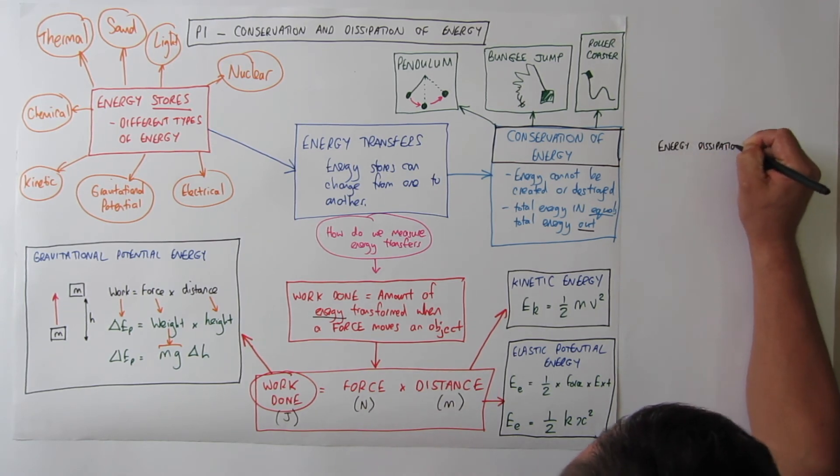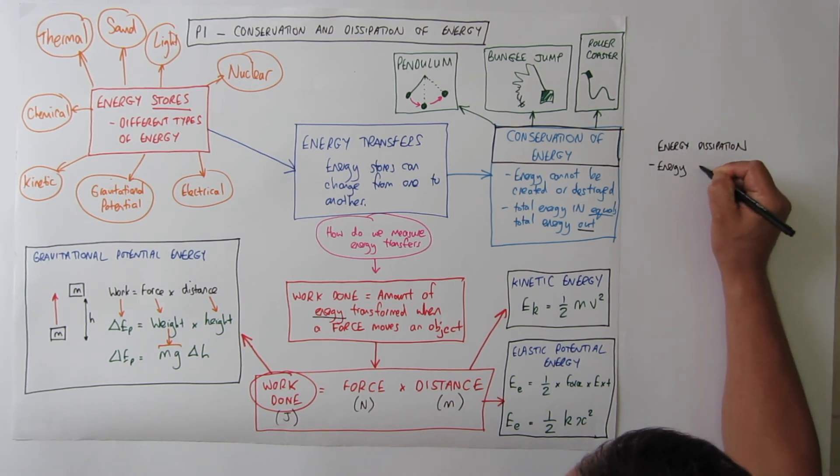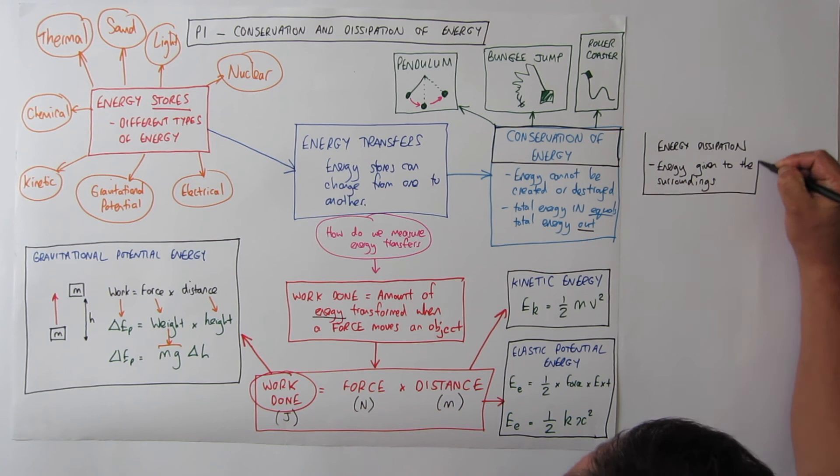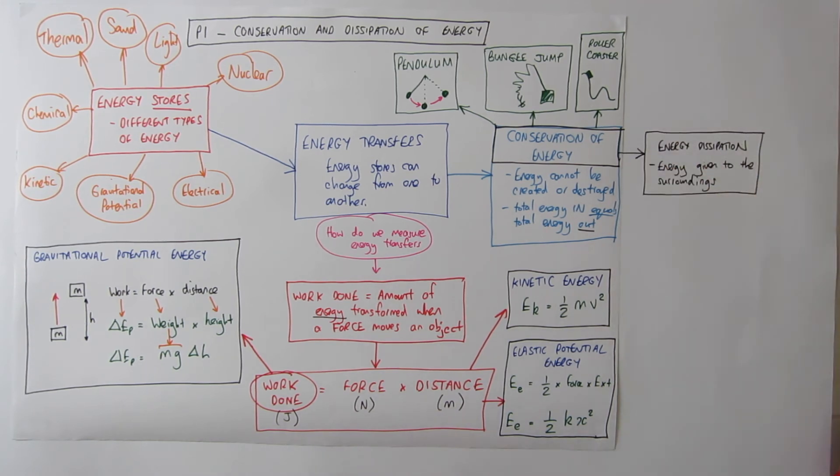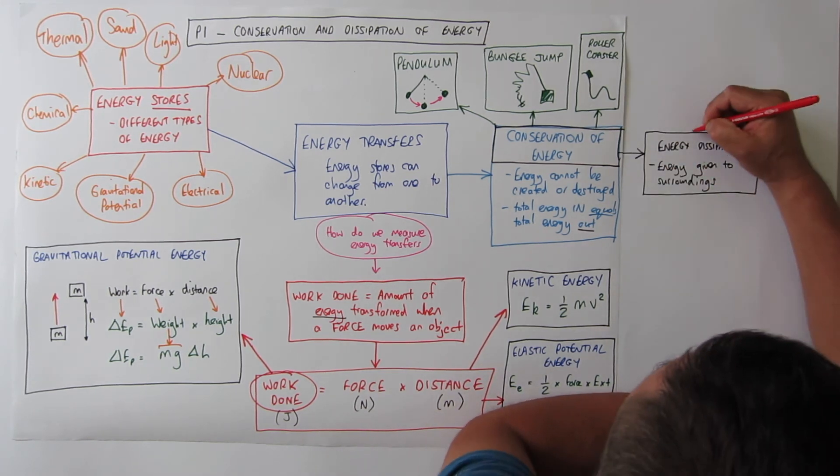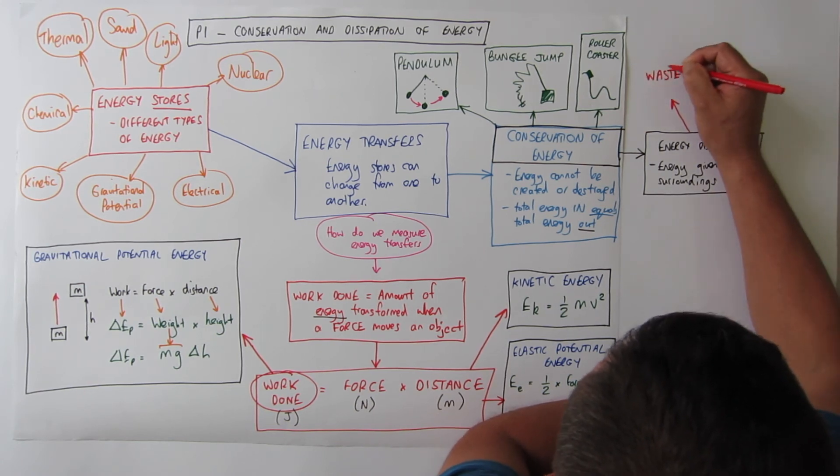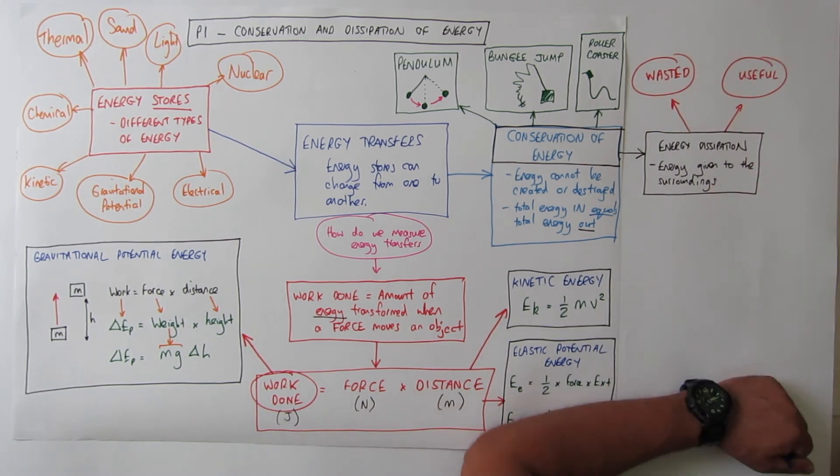Now when energy is given out into the surroundings this is called energy dissipation. Now when energy is dissipated it can be one of two things. It can be either wasted or useful.